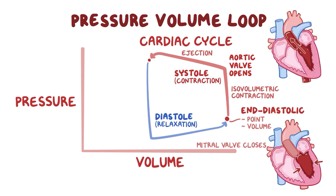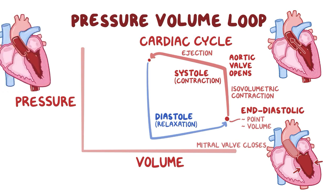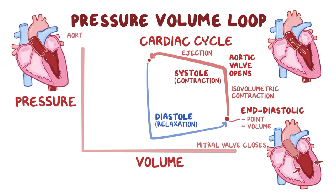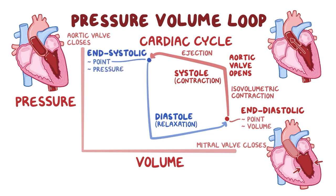Finally, when aortic pressure exceeds left ventricle pressure, the aortic valve closes, marking the end of systole, or the end systolic point. At this point, left ventricle pressure is called end systolic pressure, and left ventricle volume is called end systolic volume. The difference between end diastolic volume and end systolic volume is the stroke volume.